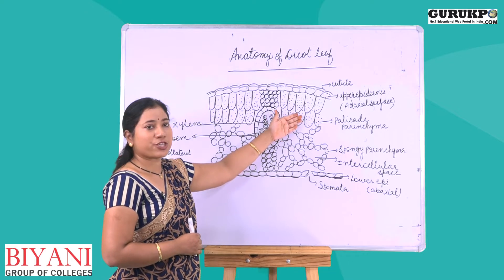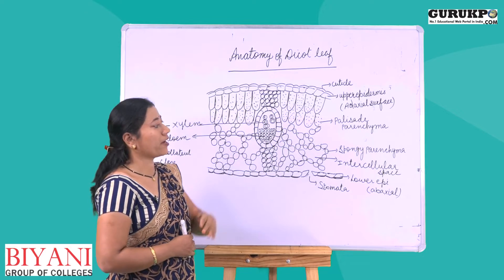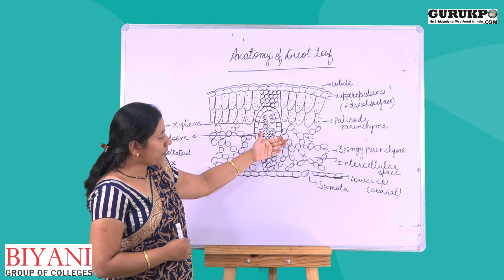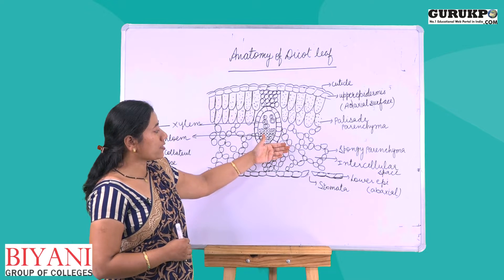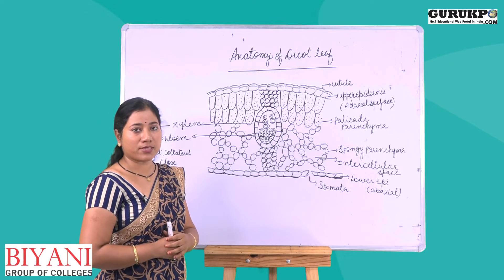Next to palisade parenchyma, there is spongy parenchyma. This spongy parenchyma is present towards the lower epidermis and has large intercellular spaces.